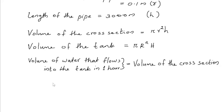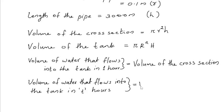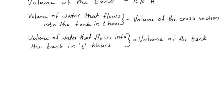The volume of water that flows into the tank in t hours is equal to the volume of the tank. The volume of the water that flows into the tank in t hours is πr²h × t, and the volume of the tank is πR²H. Cancel π from both sides.